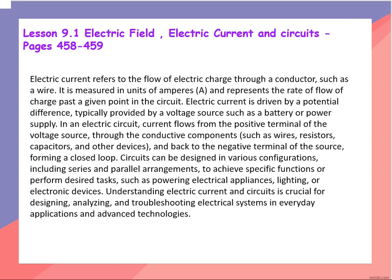In an electric circuit, current flows from the positive terminal of the voltage source through the conductive components — such as wires, resistors, capacitors, and other devices — and back to the negative terminal of the source, forming a closed loop.